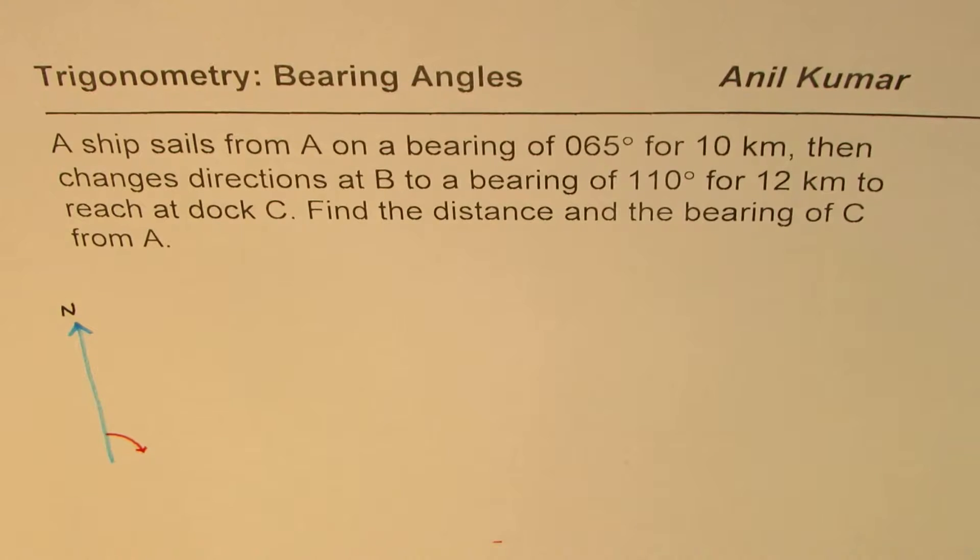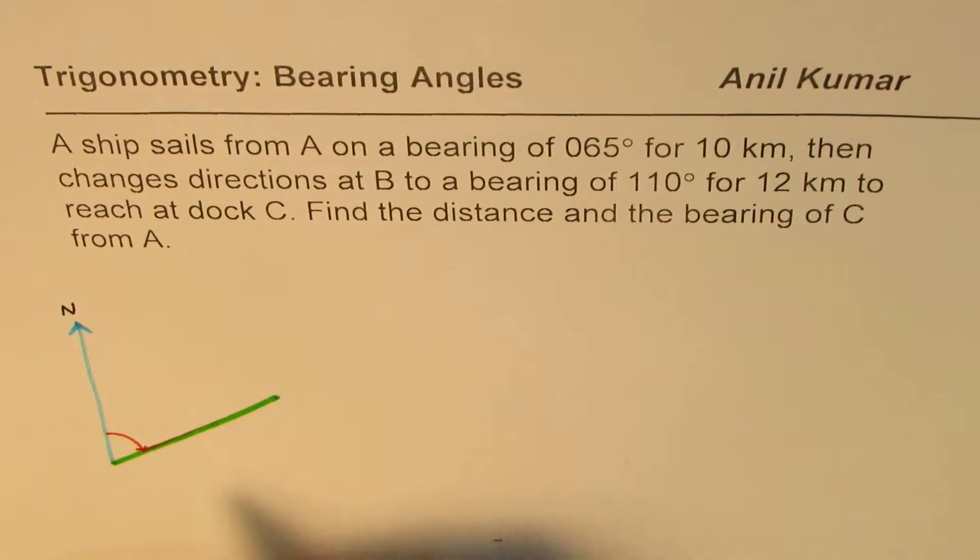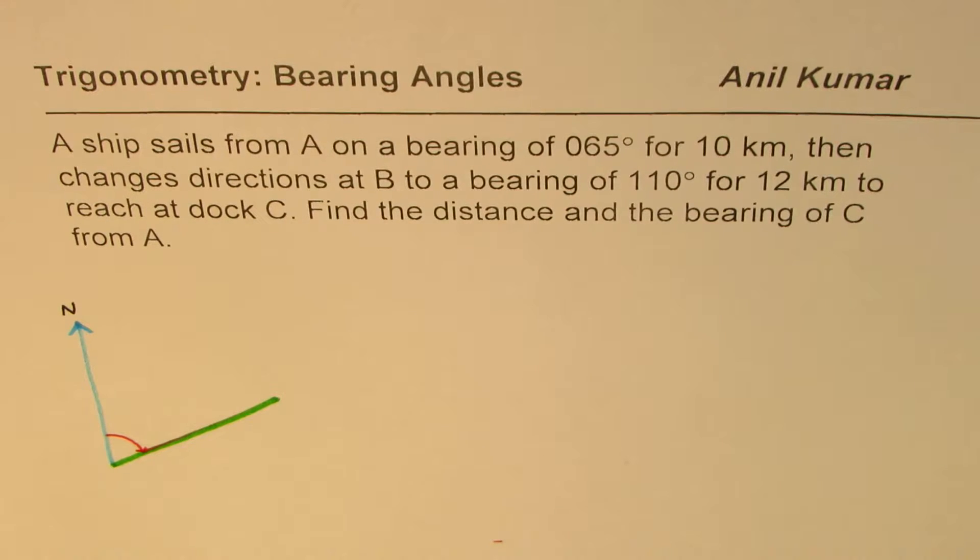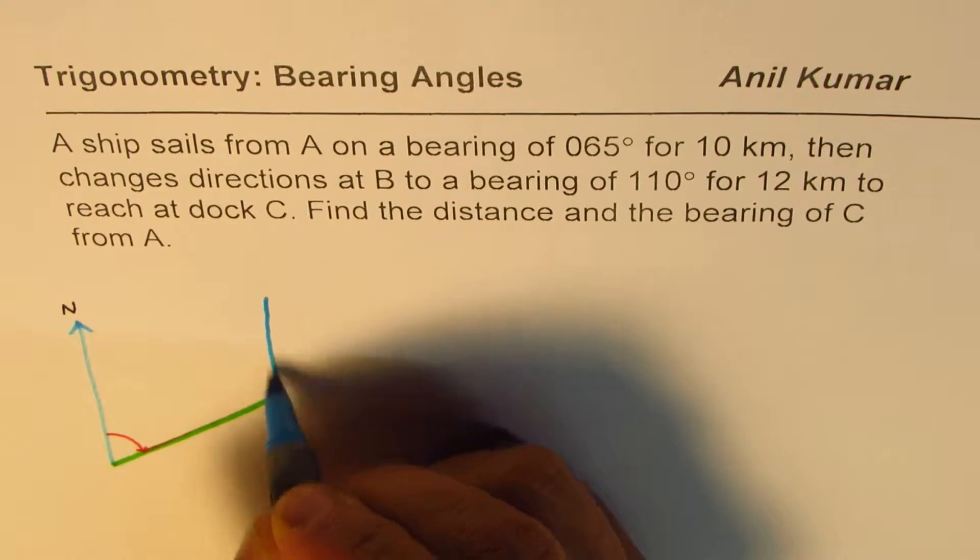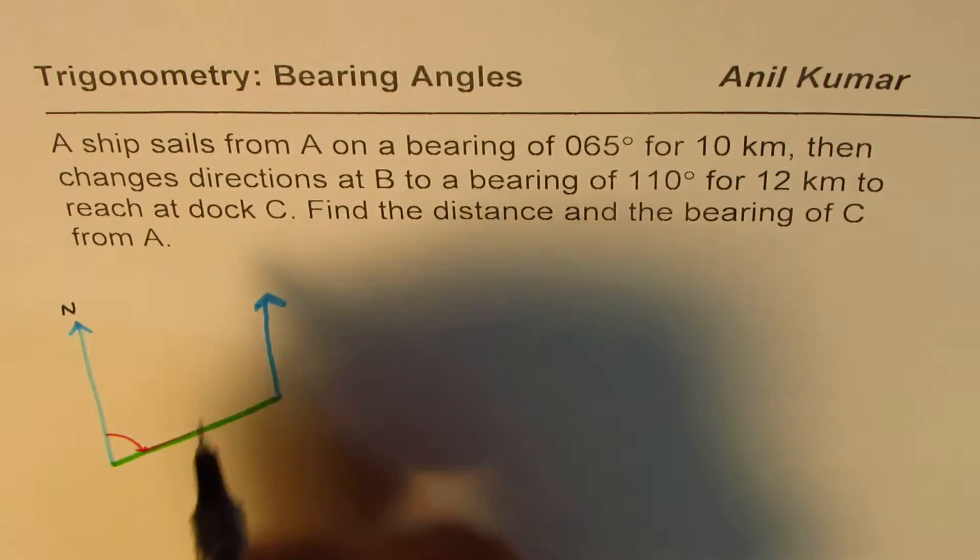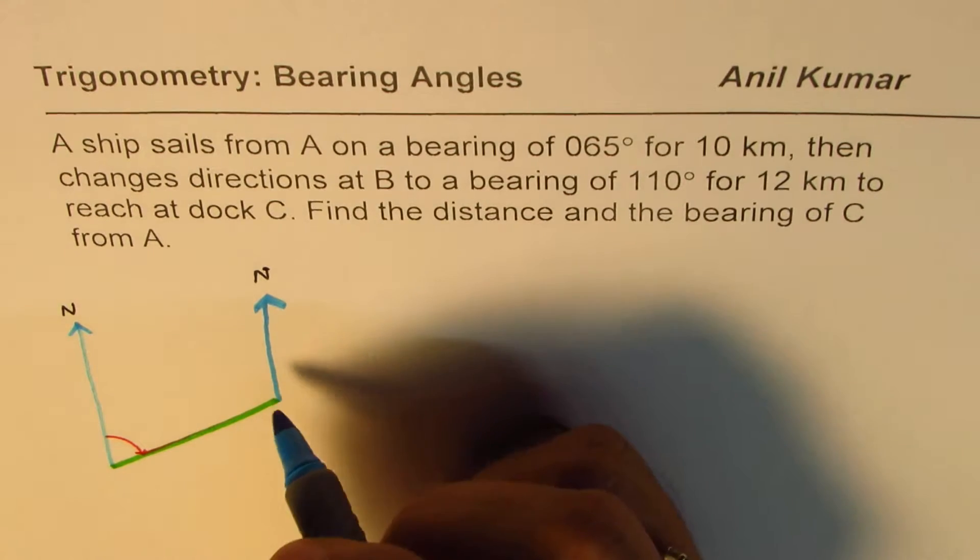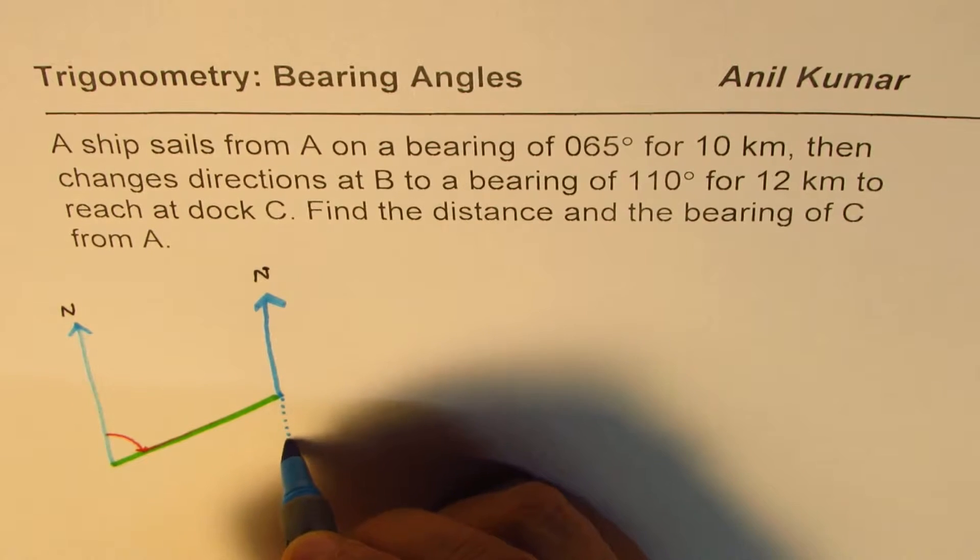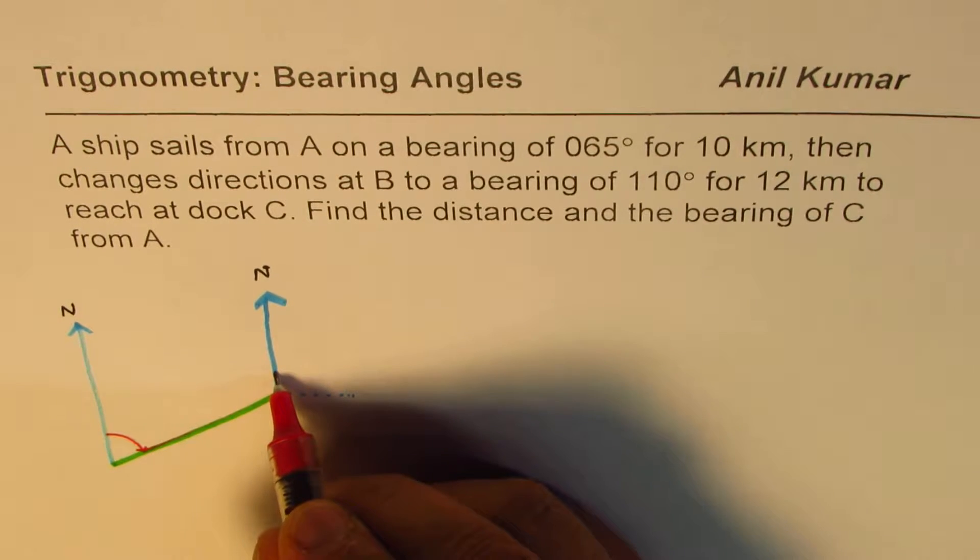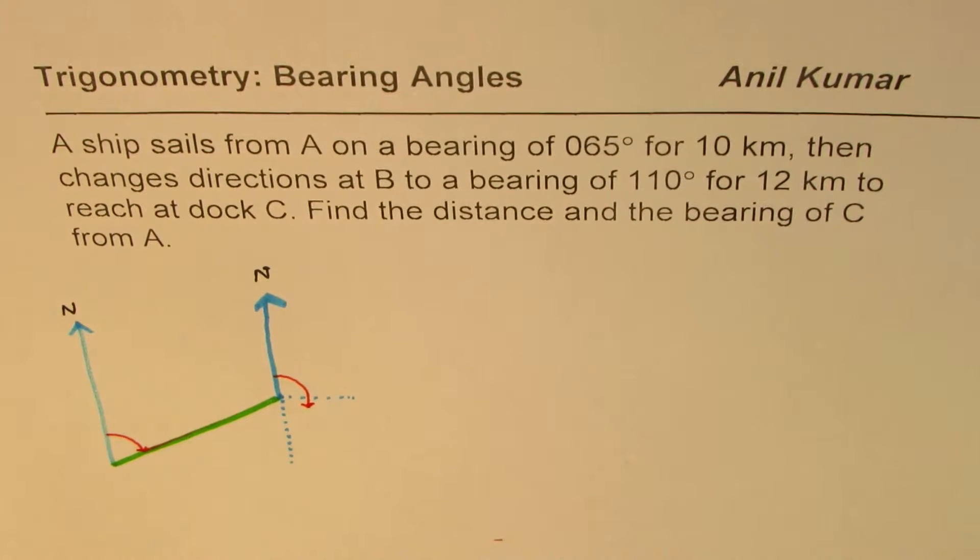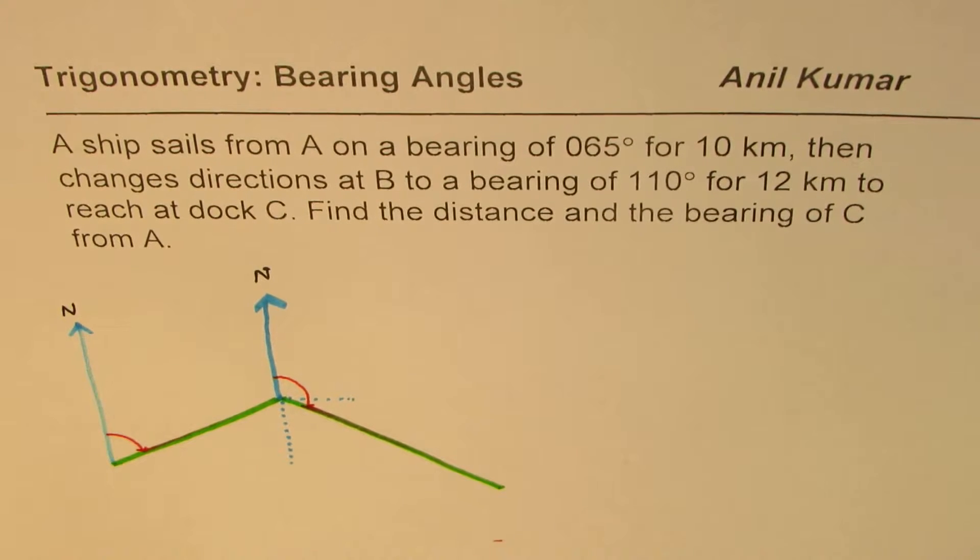So 65 will be written as 065. So this angle is clockwise from north. Let's say that is 65 degrees. So it sails for 10 kilometers. So from A let me draw a line showing this path of 10 kilometers. Now it says then changes direction at B to a bearing of 110 degrees. So let's again draw the north so that these norths are all parallel lines. And it changes direction to 110 degrees.